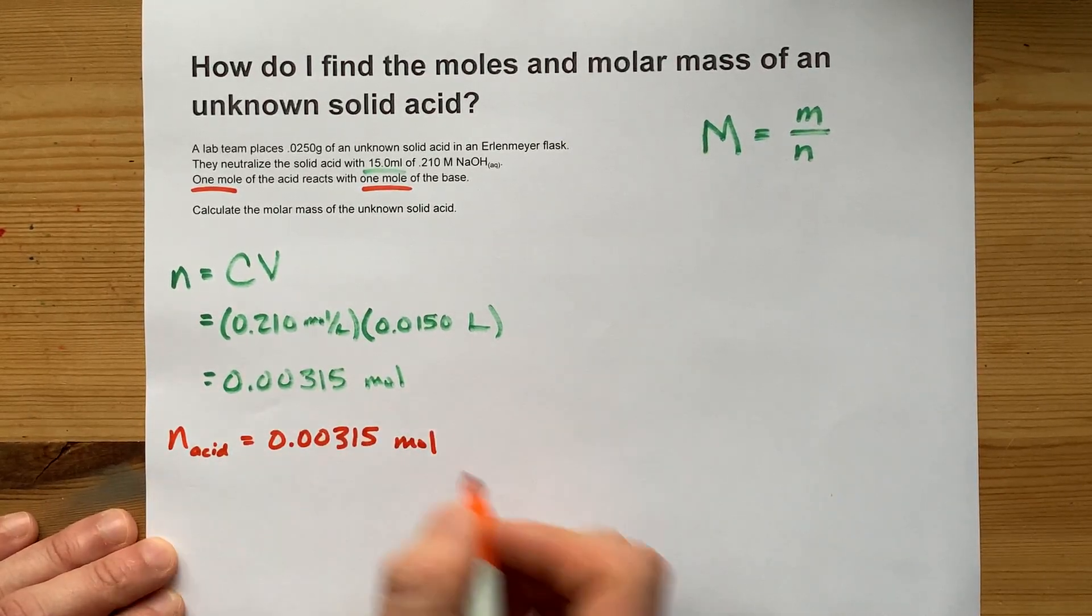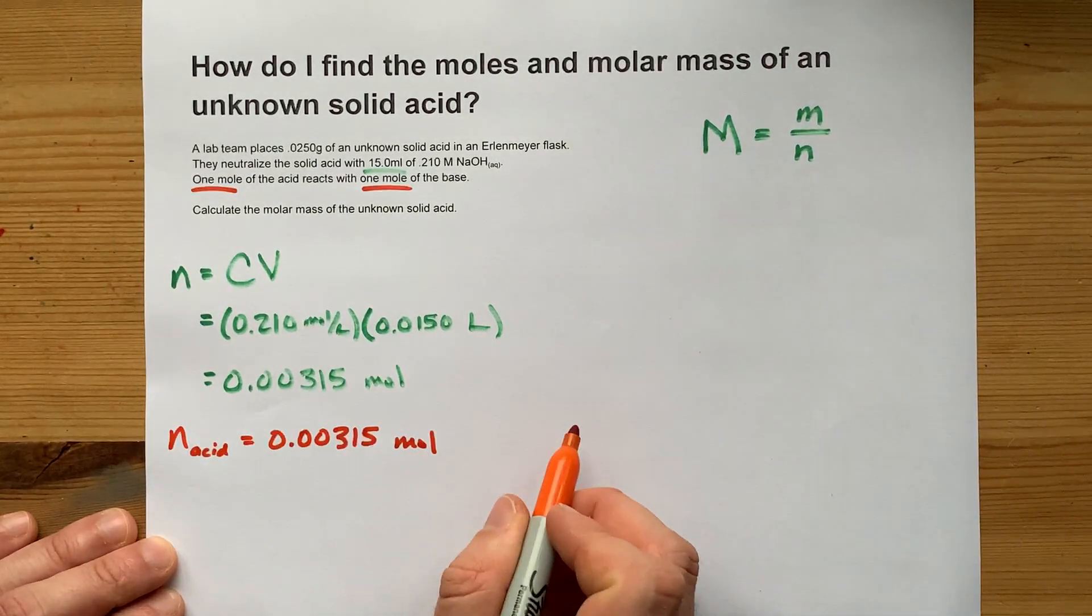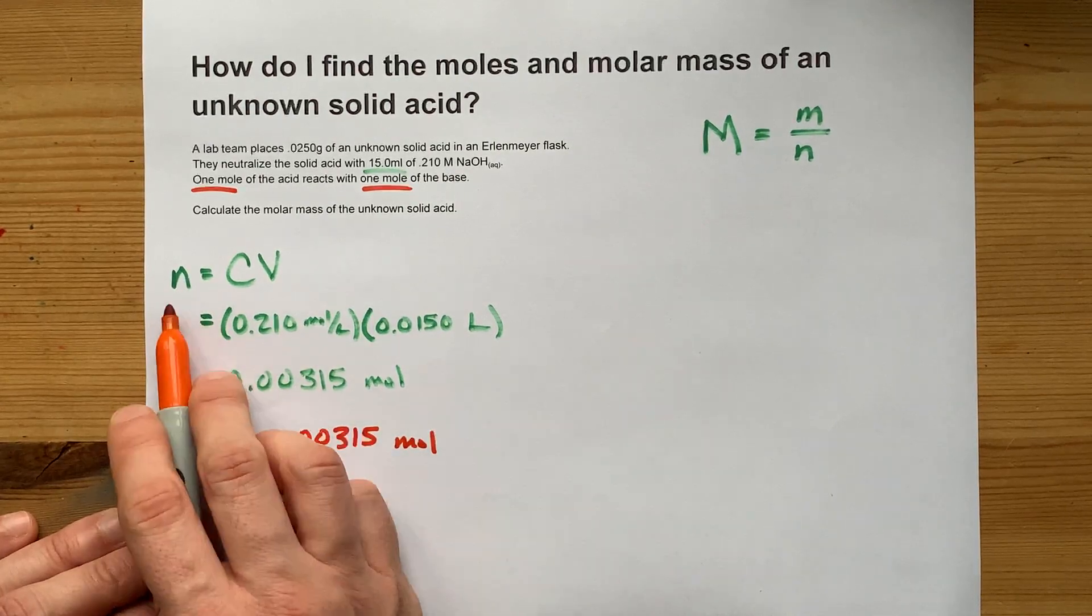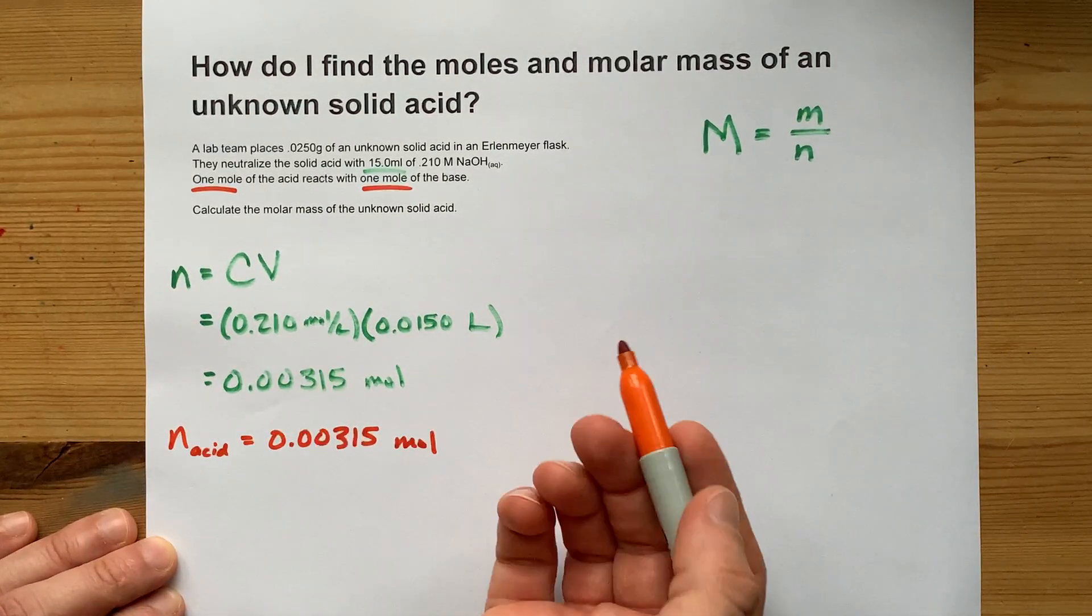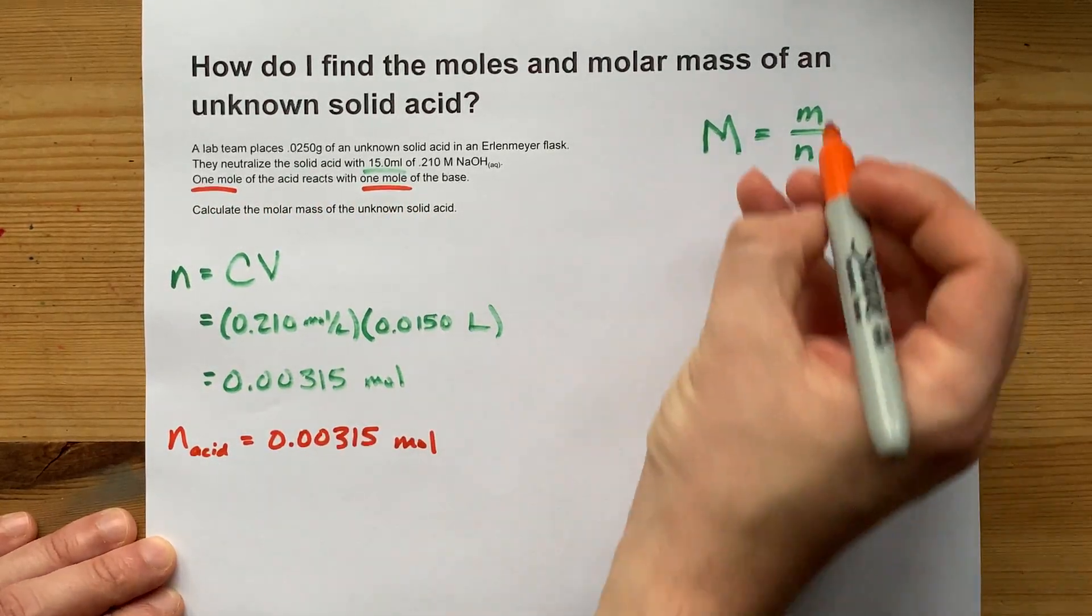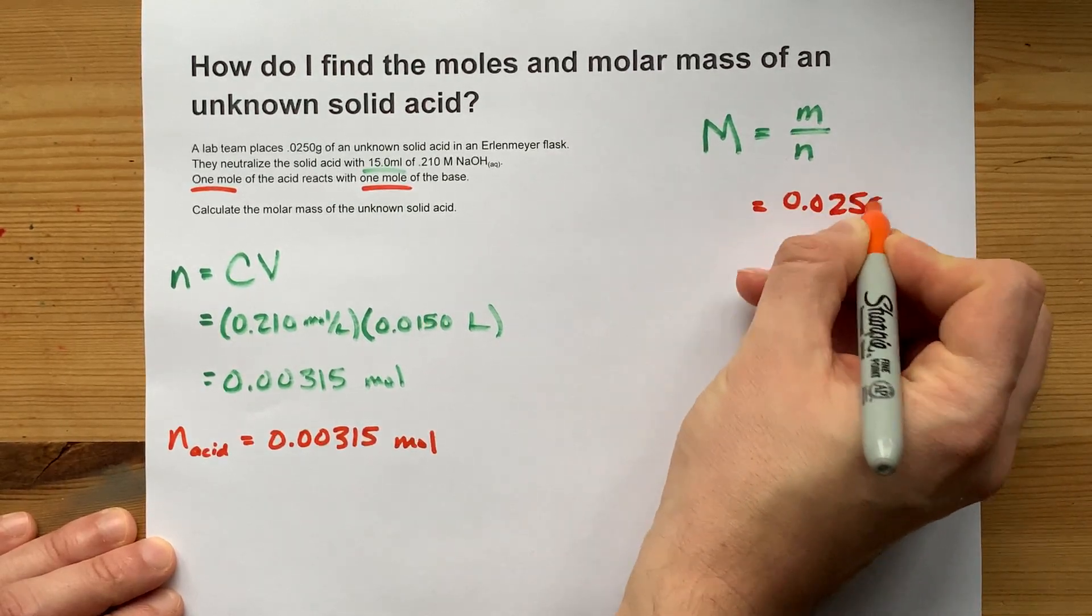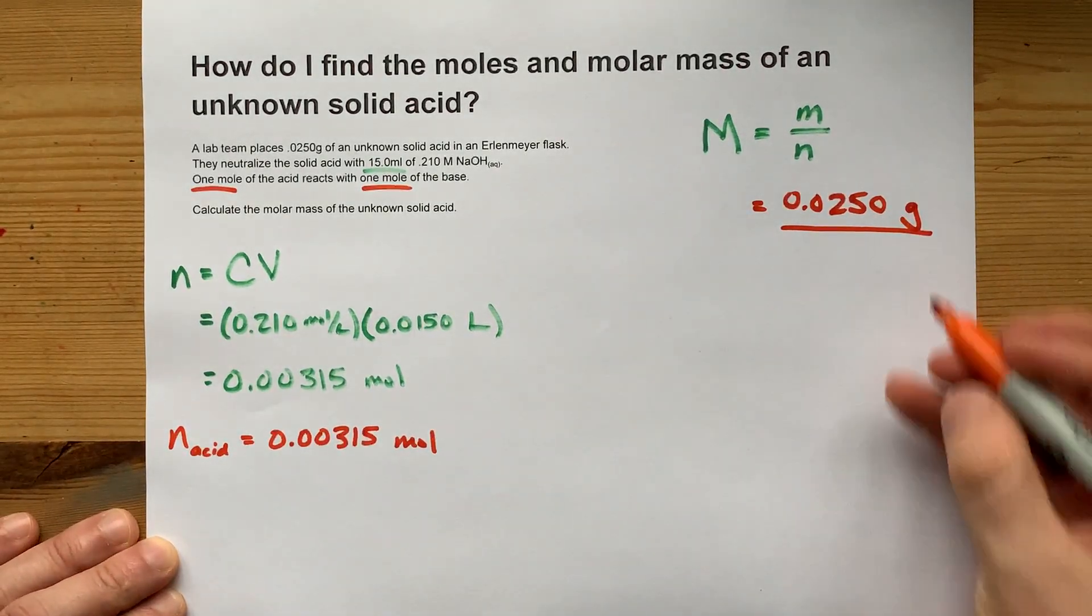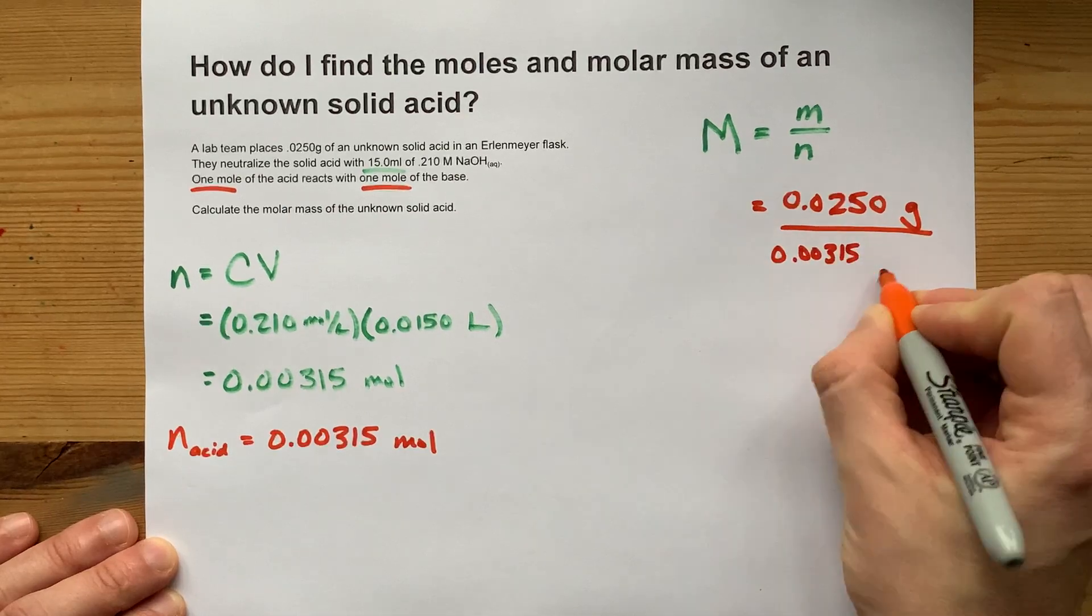Now you have the number of moles of acid. That can go in for little n over here. Be careful. You don't often want to use the number of moles of base in that formula unless you're explicitly told that it's a one-to-one ratio. And we did have the number of grams that it represented or that we weighed out to start with. It's that many grams, and we're distributing that mass around this small number of moles.